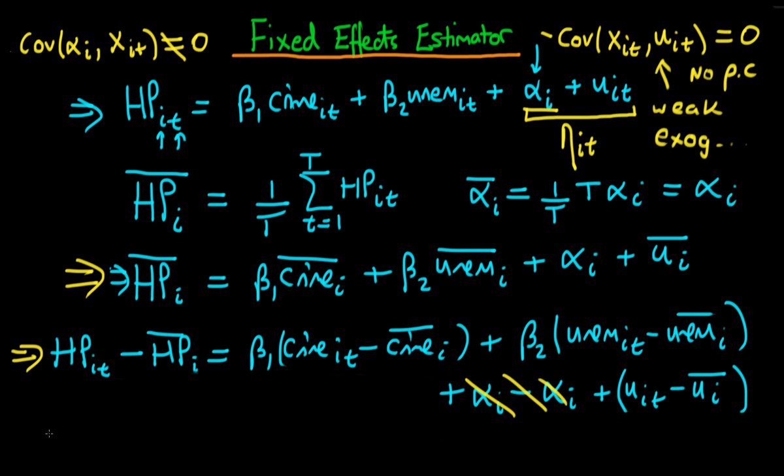What we can do is we can rewrite our model so we can rewrite the transformed dependent variable, the house prices, as its time demeaned value and we write house prices i t with a tilde on top of it to represent that, and that's equal to beta 1 times crime i t tilde